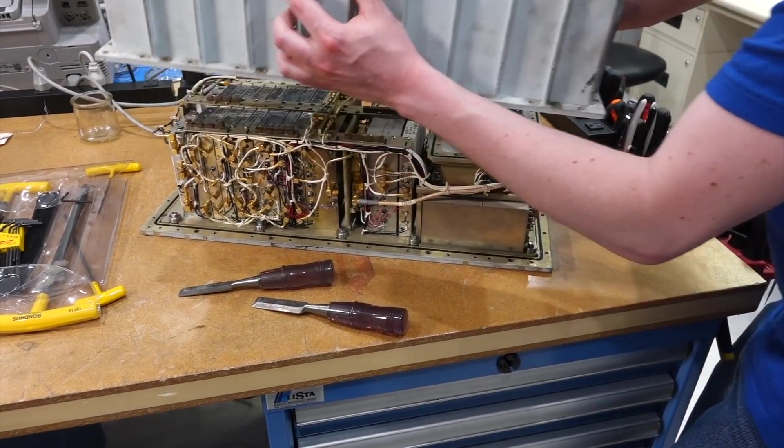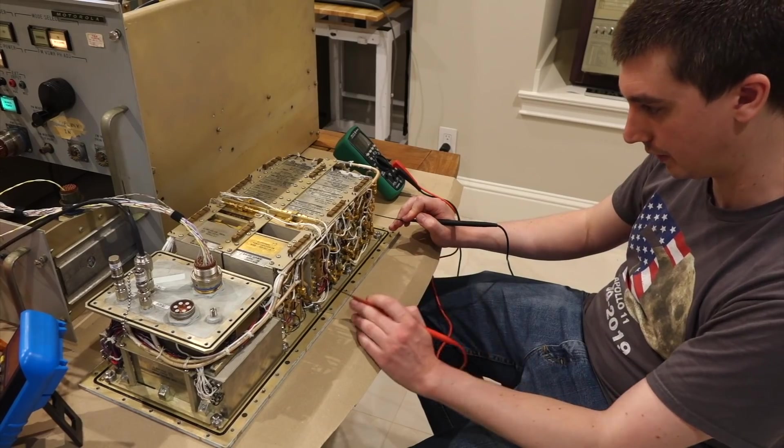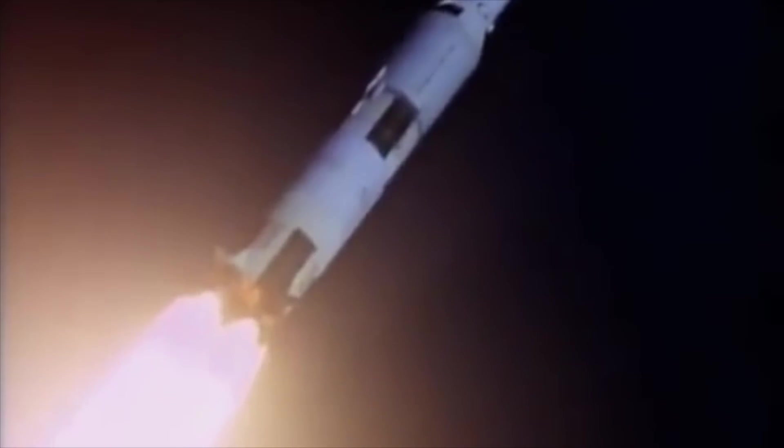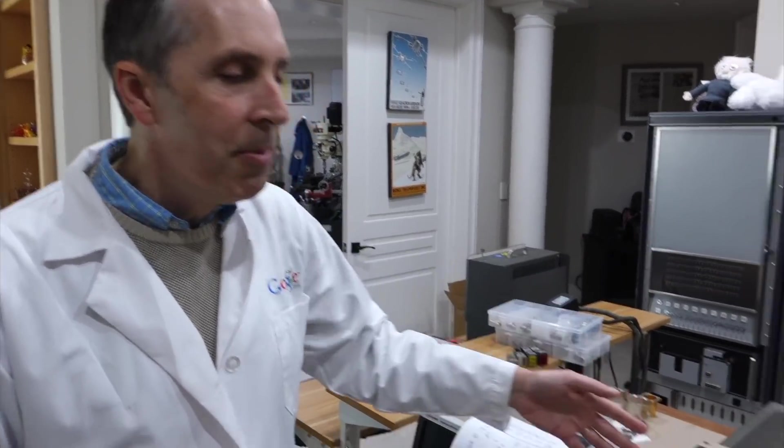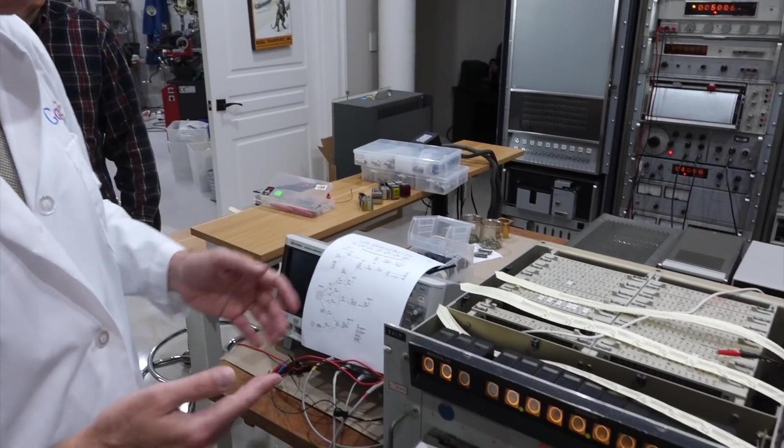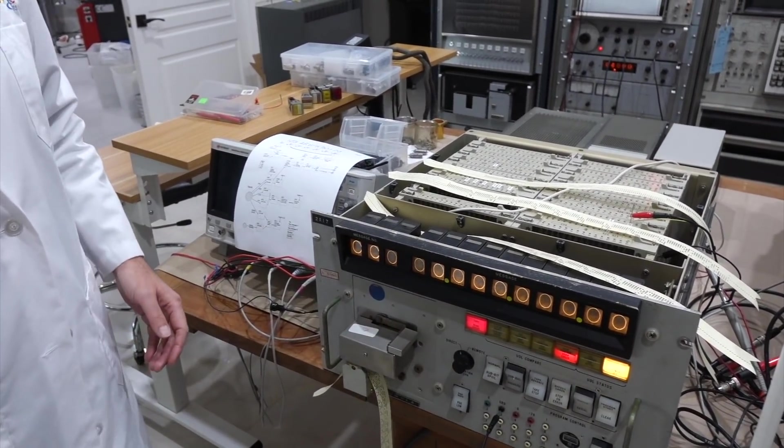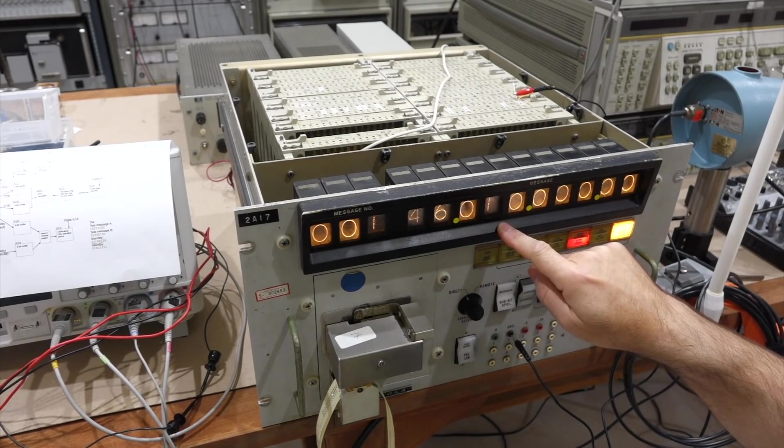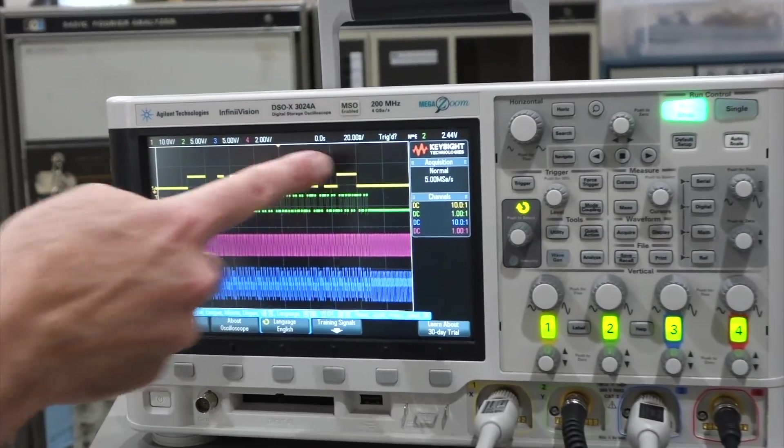Our spacecraft transponder is now fully up and running, and we have turned our attention to the ground part of the link. In the last episode, we finished the bring up of our Updata test box. We were able to read in spacecraft commands from a paper tape and let our test box encode it into bits and sub-bits.